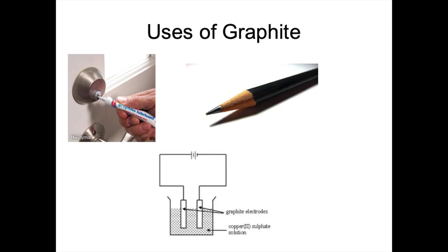Like diamond, graphite's uses are linked to its properties, its structure and its bonding. Graphite is used as a lubricant because it has weak forces between the layers and the layers can slide over each other. It's also used in pencils because graphite is soft, again because the layers can slide over each other. Graphite is also used in electrolysis as electrodes because graphite is unreactive and it's a good conductor of electricity.